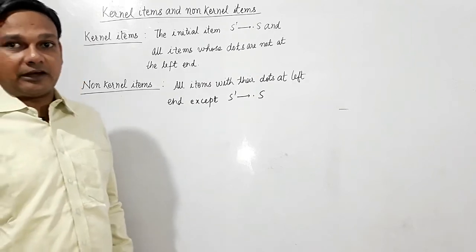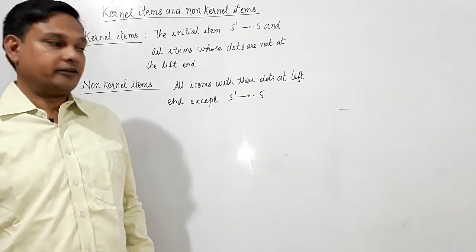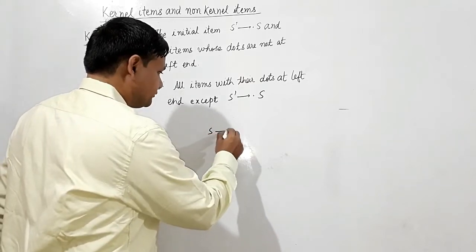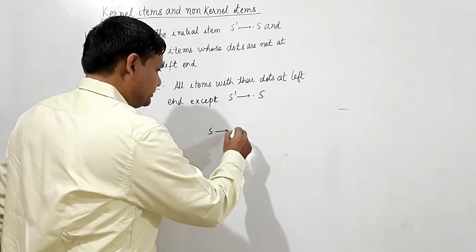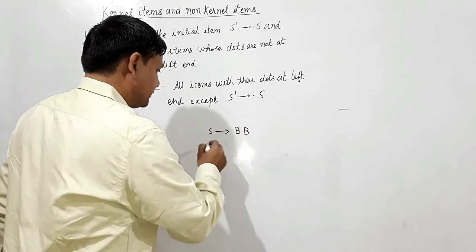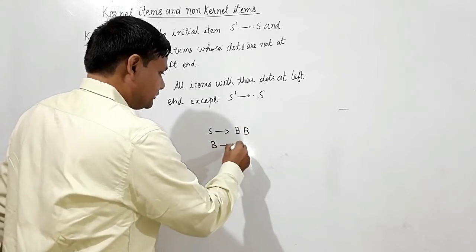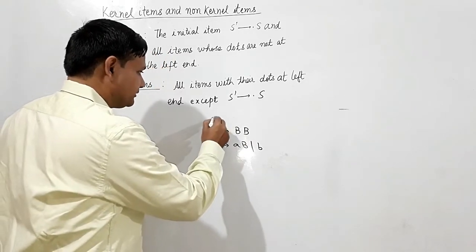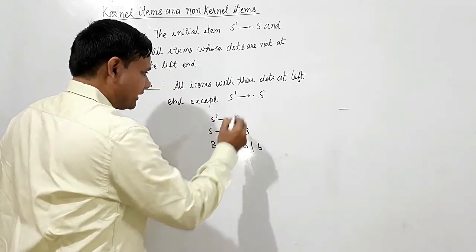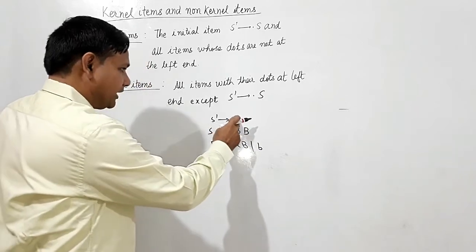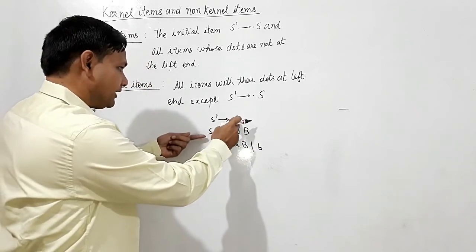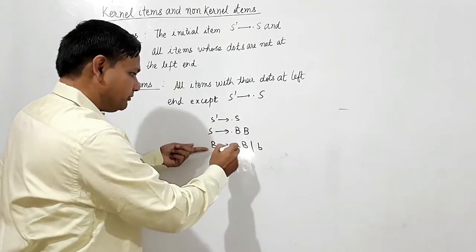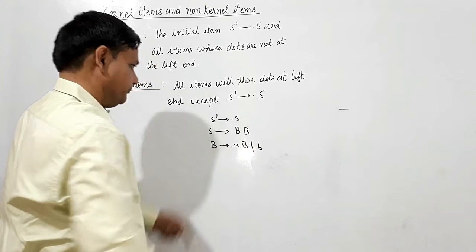Here I will explain kernel items and non-kernel items. I will take an example: S is giving bV, and B is giving ab or b. We shall use augmented production here, and S-dash will give dot S. I will have to write the closure of it. S will give dot bV, and the closure of B gives: B will give dot a, B, or dot bV.